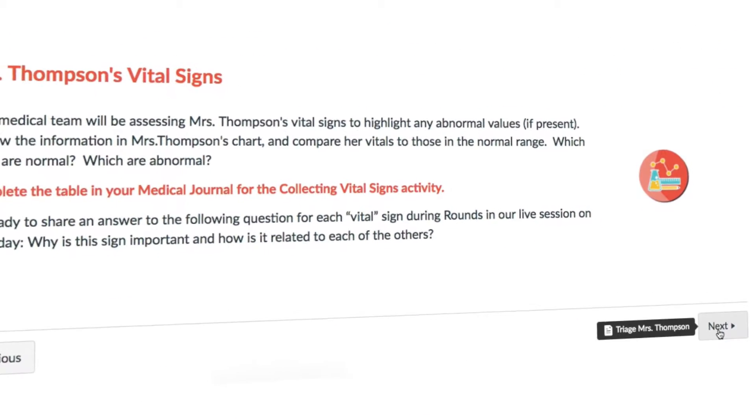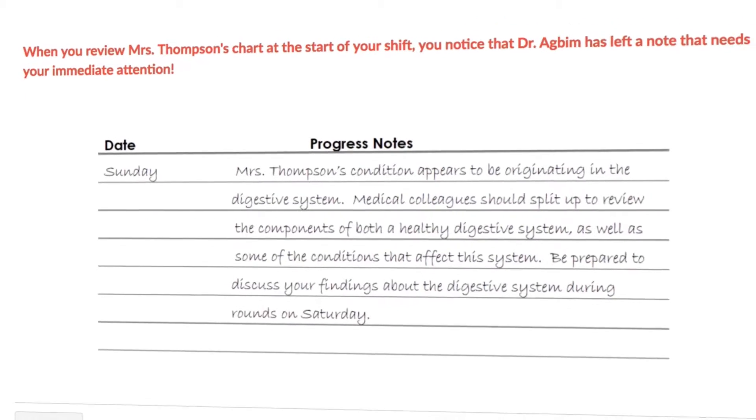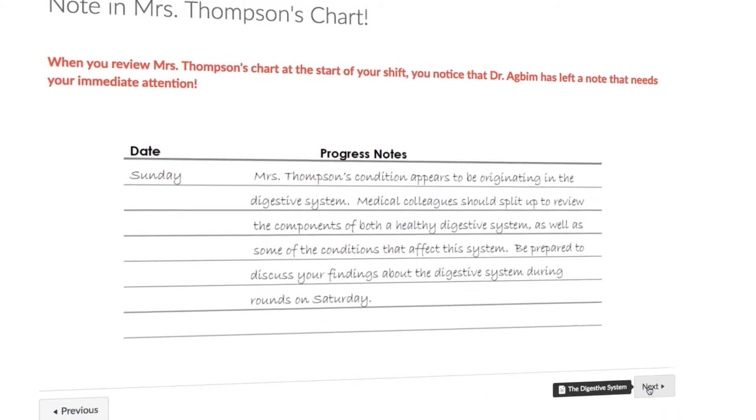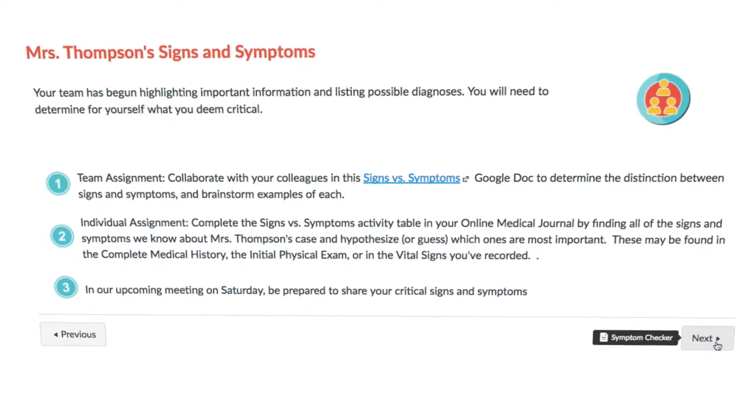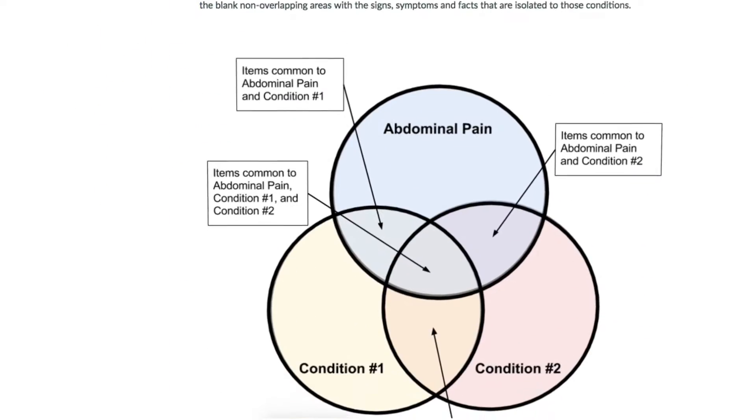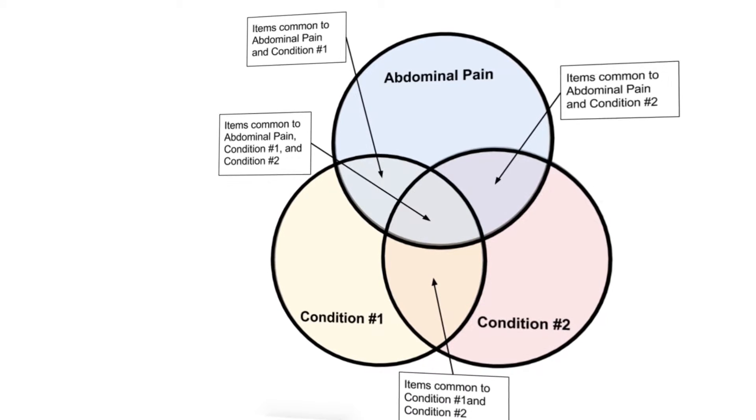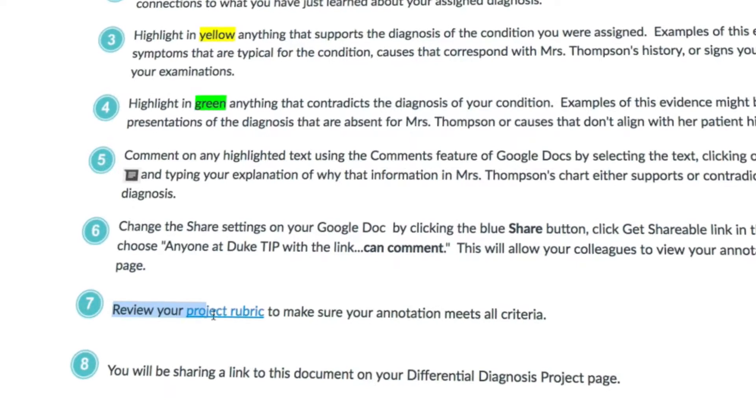We triaged her using the emergency severity index. And we had to pay attention to her HPI and PMH, too. We drew a Venn diagram to help us visualize how her signs and symptoms overlap. I kept track of everything in my medical journal.